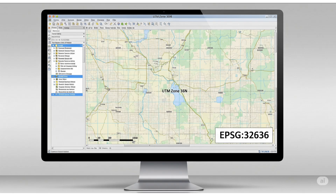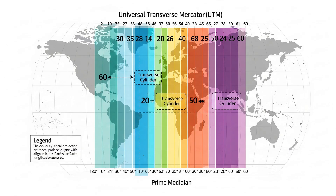While UTM is great for local accuracy, it's not ideal for mapping large areas that cross multiple zones, like continents. In such cases, projections like Lambert Conformal Conic or Albers Equal Area might be better choices.